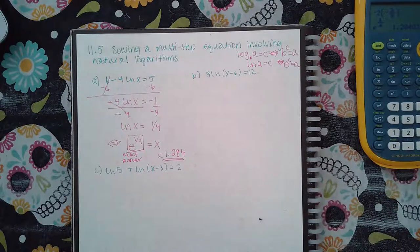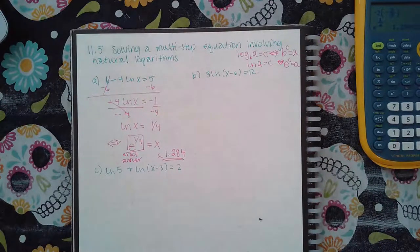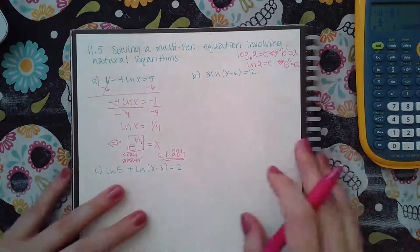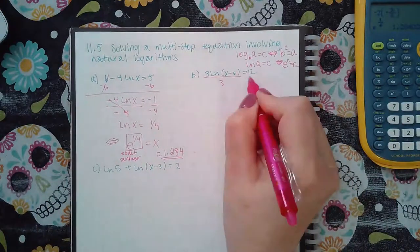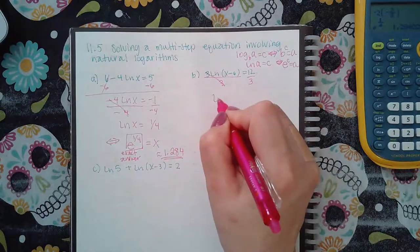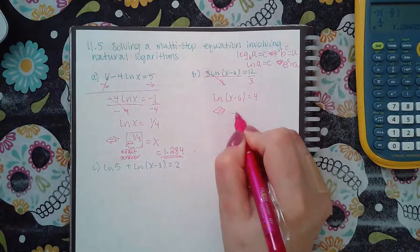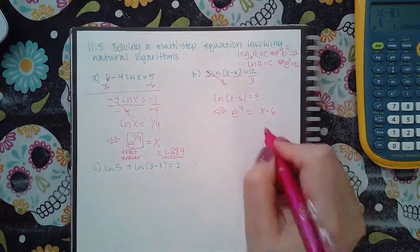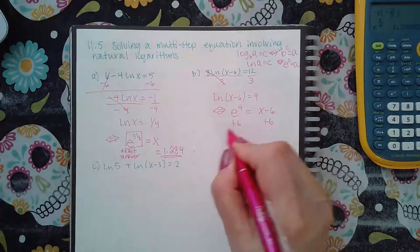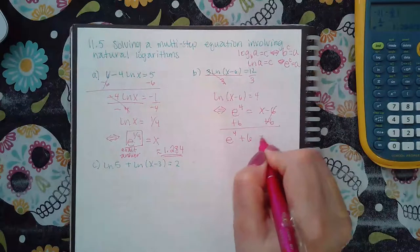Now let's see the next problem. So here I only need to get rid of the three, so I'll divide by three on both sides. And then when I switch the forms over, this becomes e raised to the fourth power equal to the argument. I do have to add six both sides, so I get e raised to the fourth power plus six.